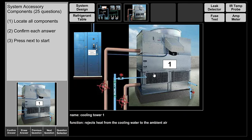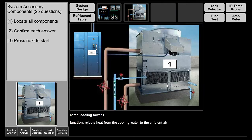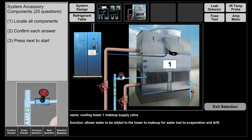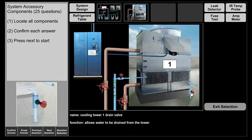As the water comes down through the fill it falls in droplets, collects at the bottom, and by the time it reaches the bottom it's at 75 degrees — or whatever setpoint is set. The setpoint is controlled by the fan cycling on/off or a VFD ramping to a certain speed. There is also a makeup water line to compensate for evaporation losses, an overfill line that drains excess water to prevent overflow, and a drain line used during seasonal shutdown to drain the cooling tower completely for winter.